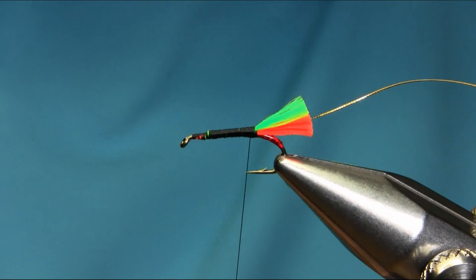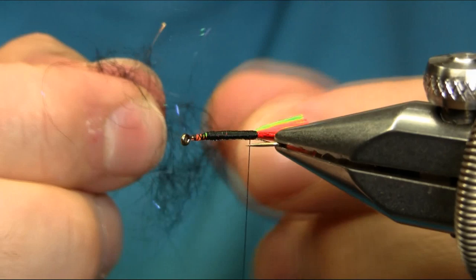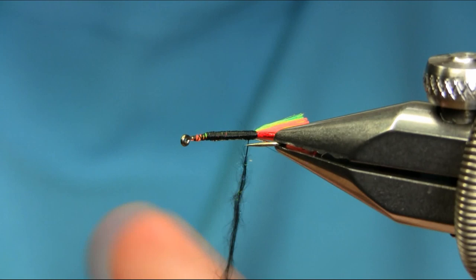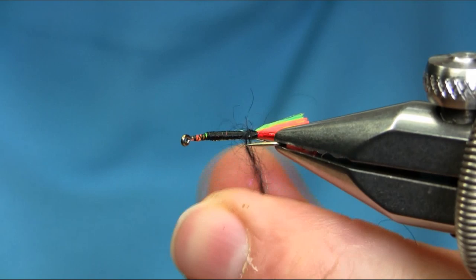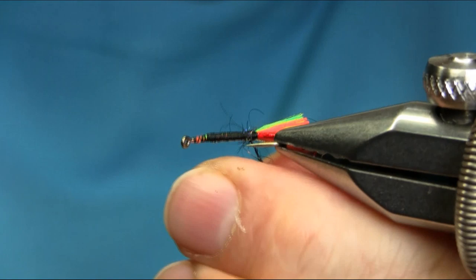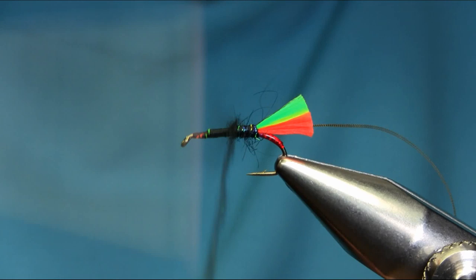For the dubbing I'm going to be using black sparkle dubbing, and this is synthetic. I'm just trying to put it on the thread, not twisting too much. I'm going to go first wrap and then just work my way as I'm coming along.